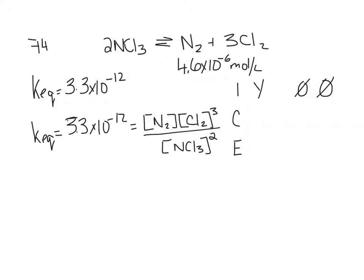Okay. What is the change for NCl3? Minus 2X. What is N2? And then Cl2? Okay. So at equilibrium we have some amount minus 2X, minus 2X, and 3X.